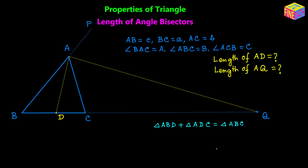To calculate the areas of triangle ABD and triangle ADC, we are going to use AD as the base. For the height, we extend the AD line segment and drop a perpendicular from point B onto the extended AD. Let's call that perpendicular BE.